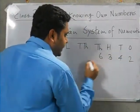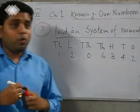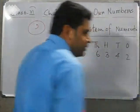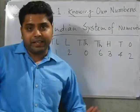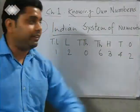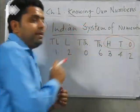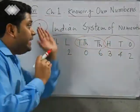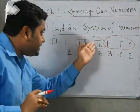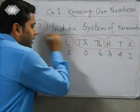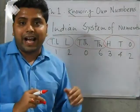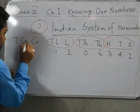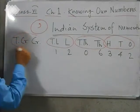Now, set any number — let's say 2, 4, 3, 6, 0, 2, 1. How can we arrange this number? We have to separate it family-wise. The first family has three members in both Indian and international systems. In the Indian system, except the first family, all other families have two members. This is the thousand family, and this is the lakh family — lakh family has two members and thousand family has two members. The crore family also has two members: crore and 10 crore.